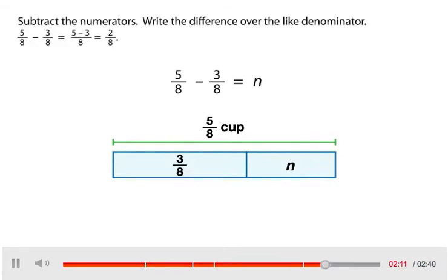Subtract the numerators. Write the difference over the like denominator. 5 eighths minus 3 eighths equals 5 minus 3 over 8, which equals 2 eighths.